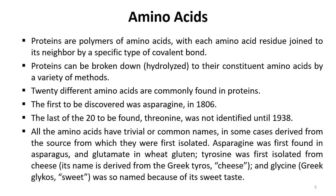Proteins can be broken down to their constituent amino acids by a variety of methods. These proteins are made from amino acids after the removal of water, and if you hydrolyze these peptides you can again obtain the amino acids from protein molecules. You have to remember that there are a total of 20 different amino acids commonly found in proteins, but amino acids are not limited to just these 20 types.